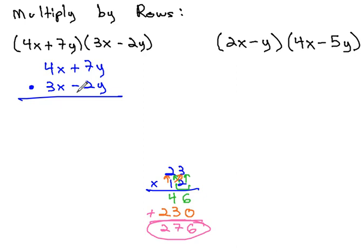We'll start with the first term instead of the first number, and multiply it by the top number. Negative 2y times 7y is negative 14y squared, and negative 2y times 4x is negative 8xy.